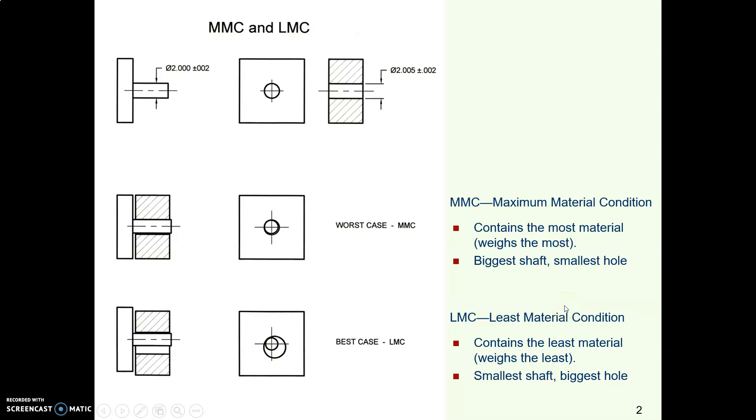Maximum material condition, just like the name implies, is when you have the most material in your part. I like to think of it as if you put the part on a scale and you weighed it, when would it weigh the most? So for a shaft, the maximum material condition is the biggest diameter.